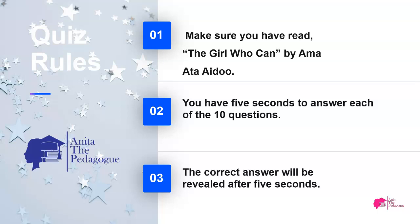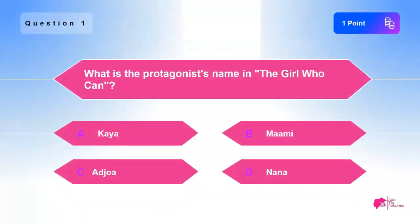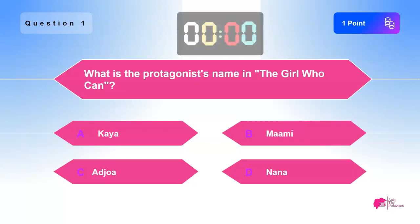Let's begin with question one: What is the protagonist's name in 'The Girl Who Can'? A) Kaya, B) Mommy, C) Ajwa, D) Nana.